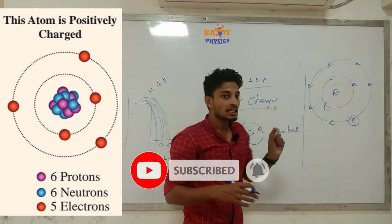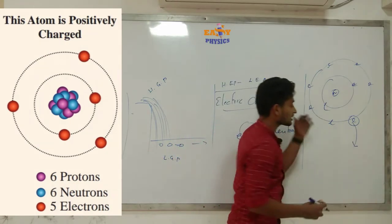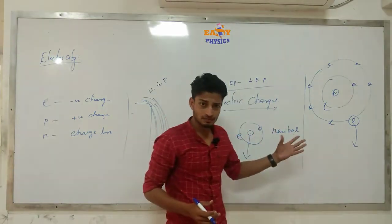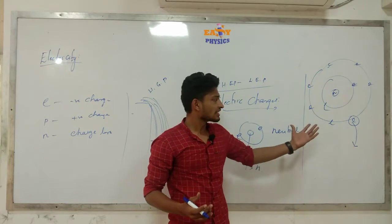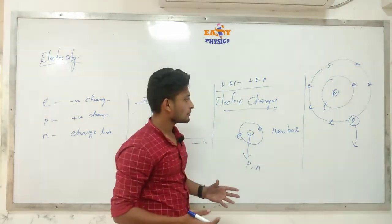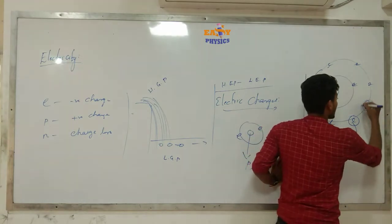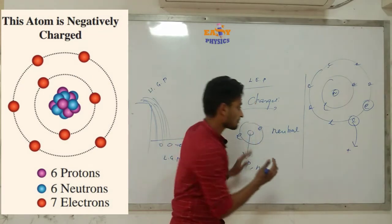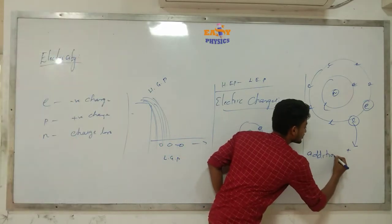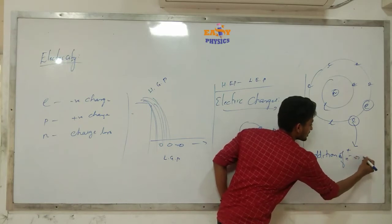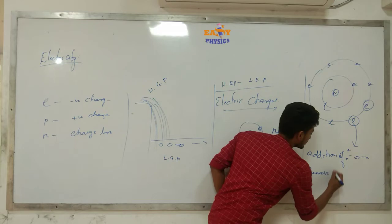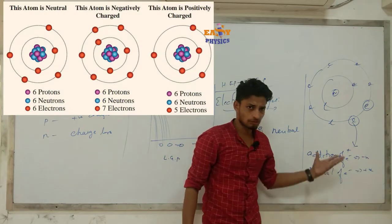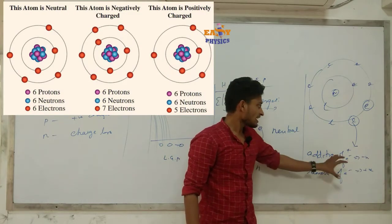If we remove one electron, we call it removal. The atom becomes positive — it is called a positive ion. If we add an extra electron to an atom, it is an addition of electron and the atom becomes negative — it is called a negative ion. So, removal of electron gives positive charge, and addition of electron gives negative charge.